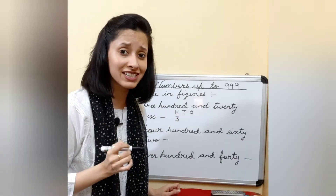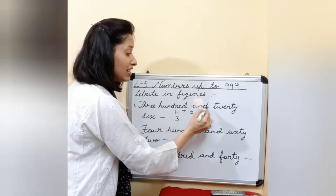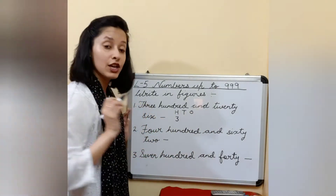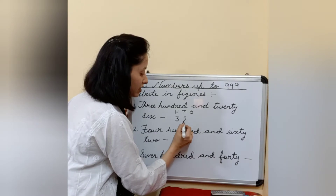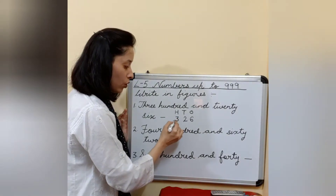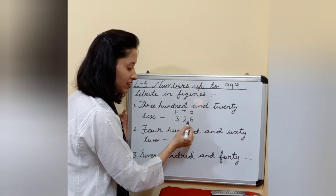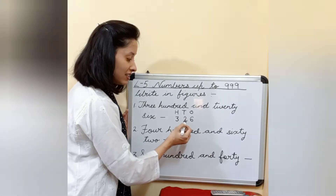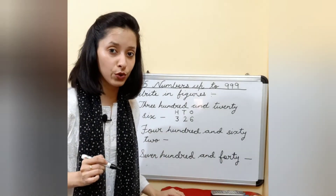Now let's read what is left with us. For 300 you have written three. What is left? Twenty-six is left. You simply have to write twenty-six over here. So it means this two is at tens place and this six is at ones place.